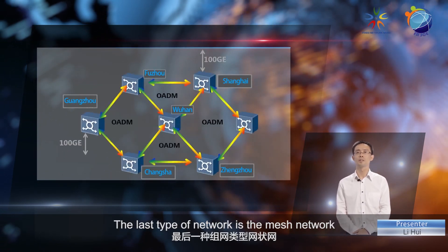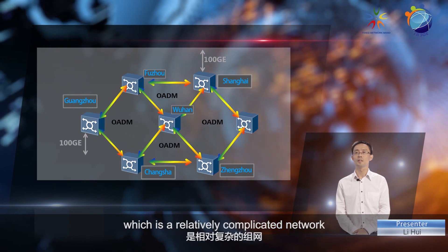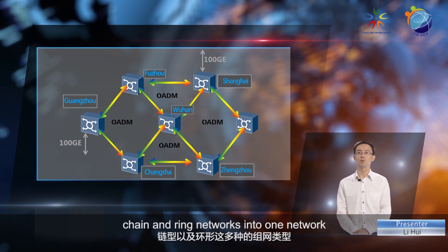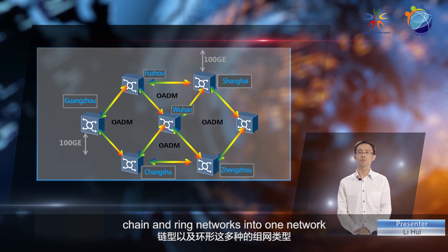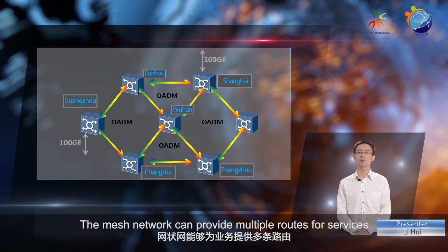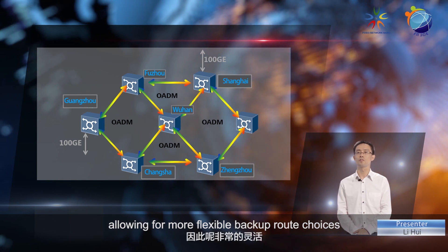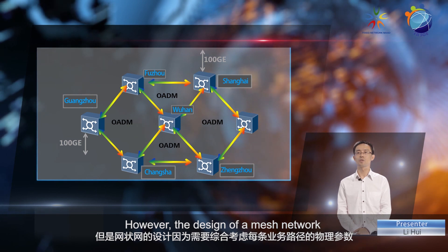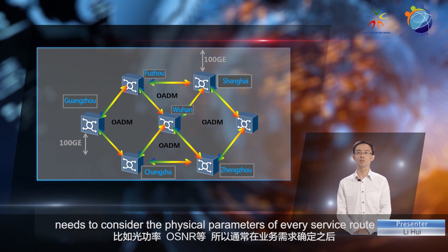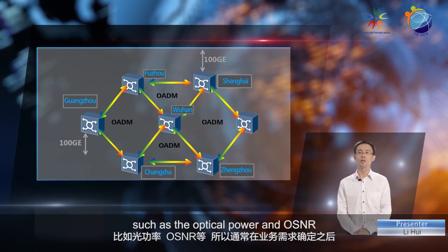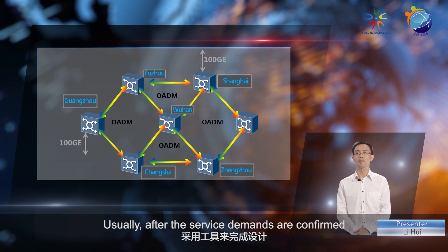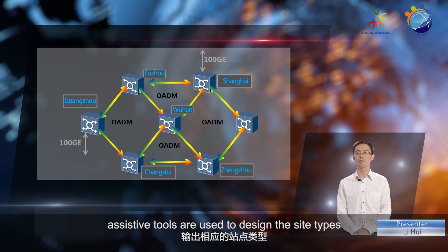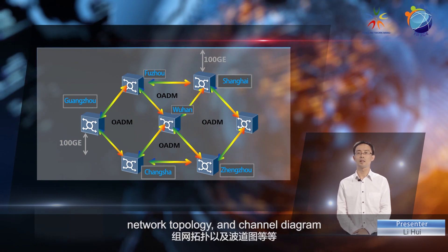The last type of network is the mesh network, which is a relatively complicated network. It integrates point-to-point, chain, and ring networks into one network. The mesh network can provide multiple routes for services, allowing for more flexible backup route choices. However, the design of a mesh network needs to consider the physical parameters of every service route, such as optical power and OSNR. Usually, after the service demands are confirmed, assistive tools are used to design the site types, network topology, and channel diagram.